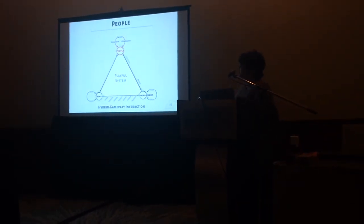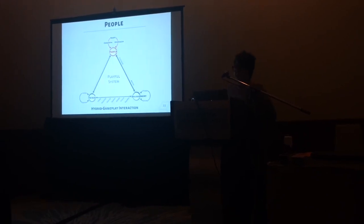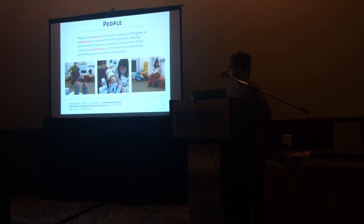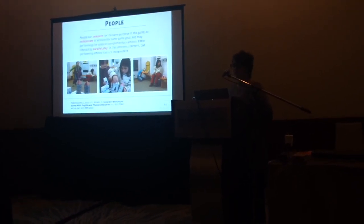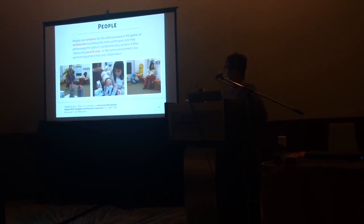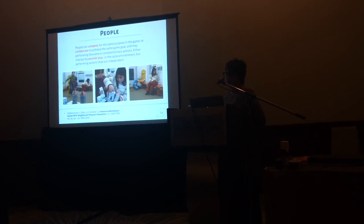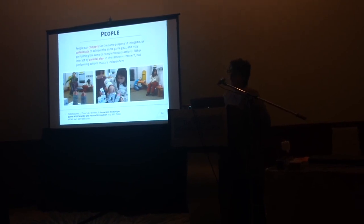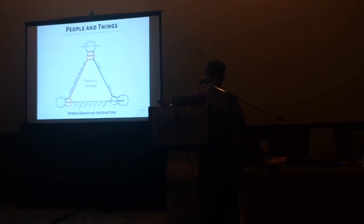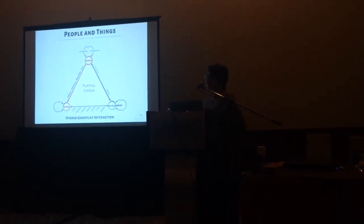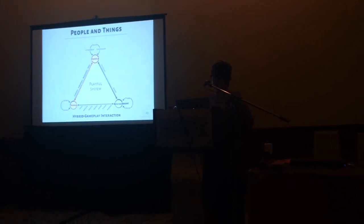On how people interact with each other, they can do it through competition, collaboration, or parallelism. In Camelot, we can see all three types of social interaction: competition between teams, collaboration between team members, and parallelism when children take independent and parallel actions in the game — some are in charge of building the castle while others collect the resources. On how people interact with things, they can do so by four general forms: vision, manipulation, embodiment, and immersion.